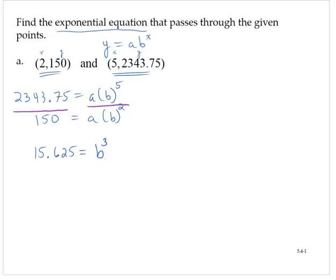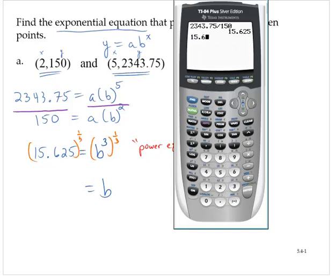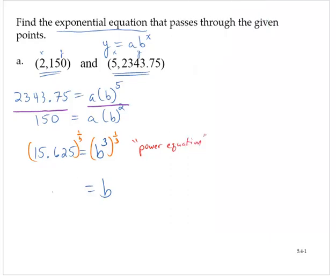Now this is a power equation. To solve the power equation, we're going to use a power. Raising both sides of the equation to the 1 third power, we have 15.625 raised to the 1 third power. That's 2.5. So b is 2.5.